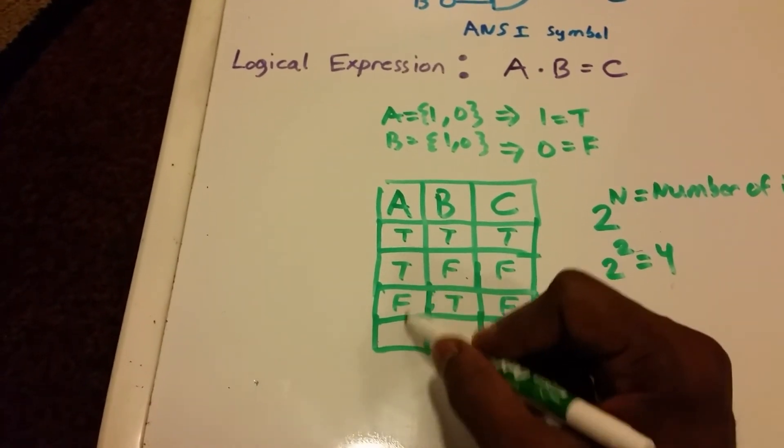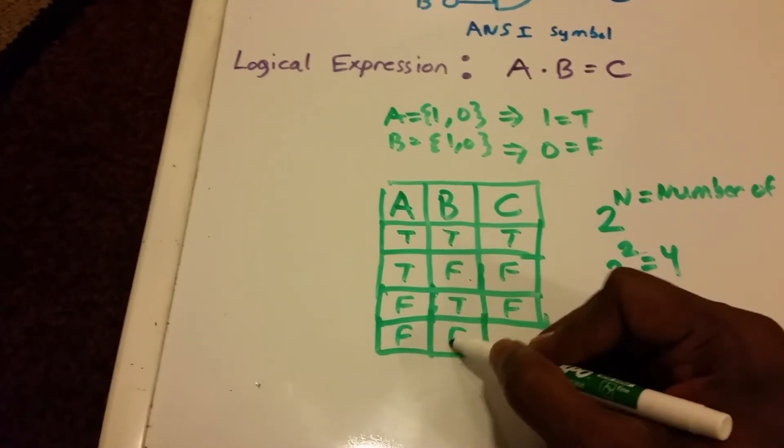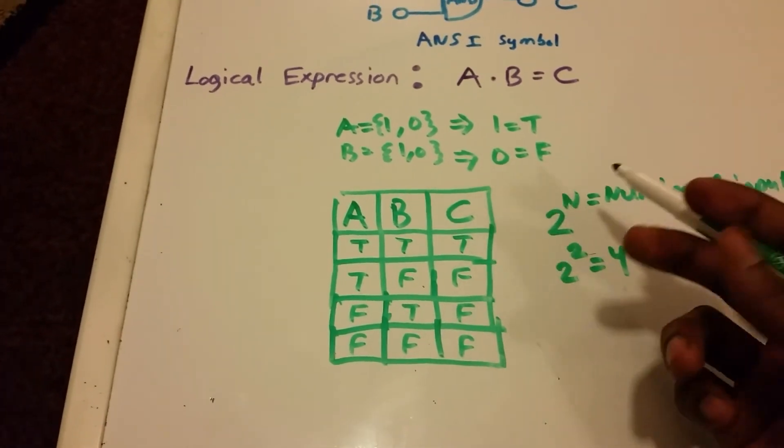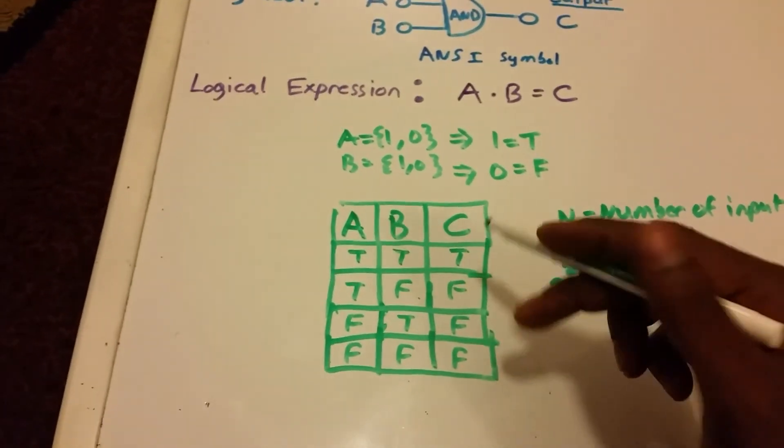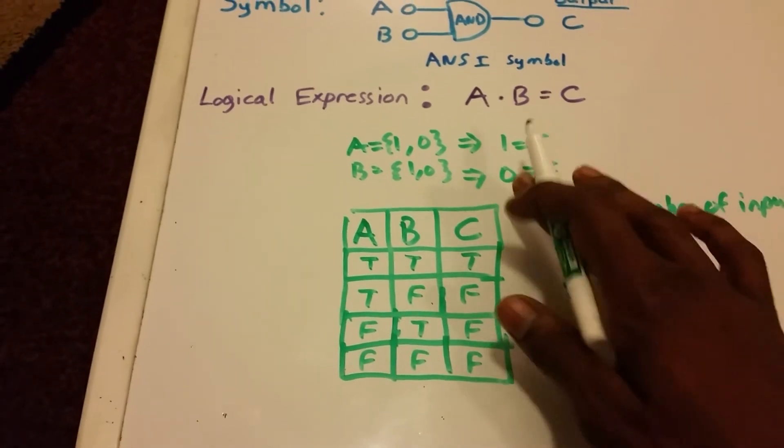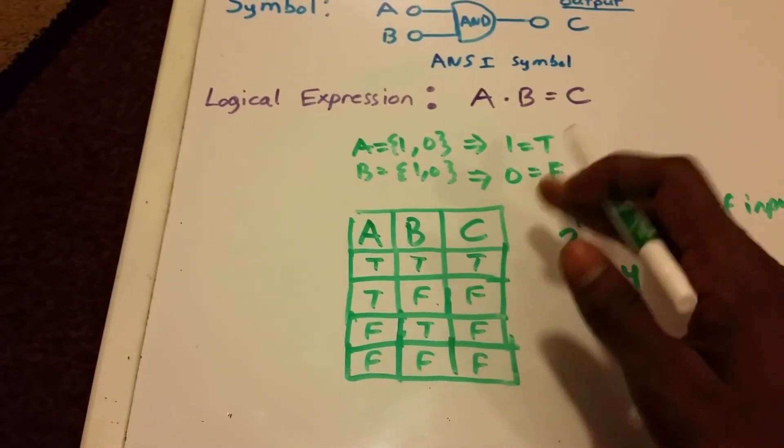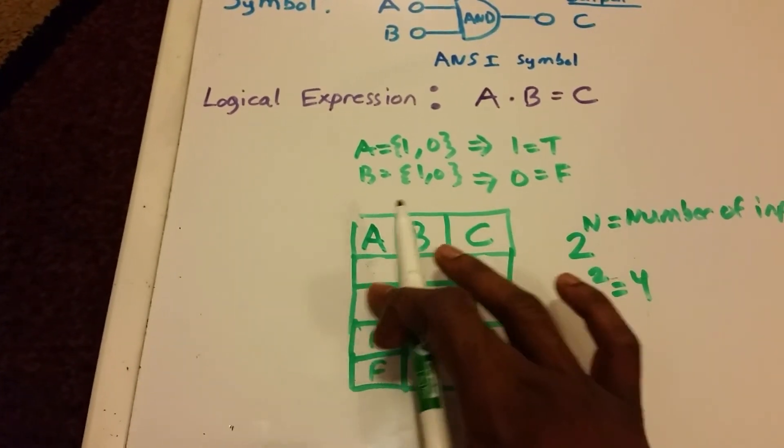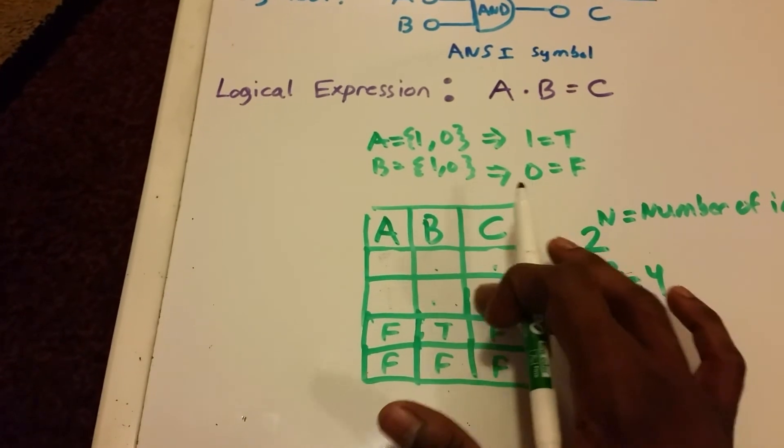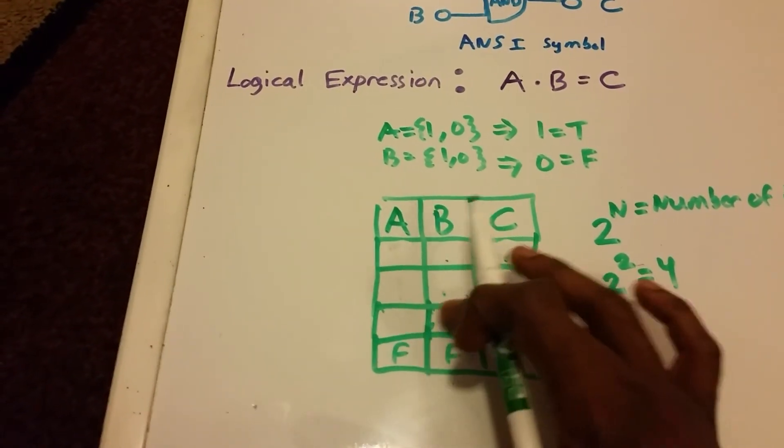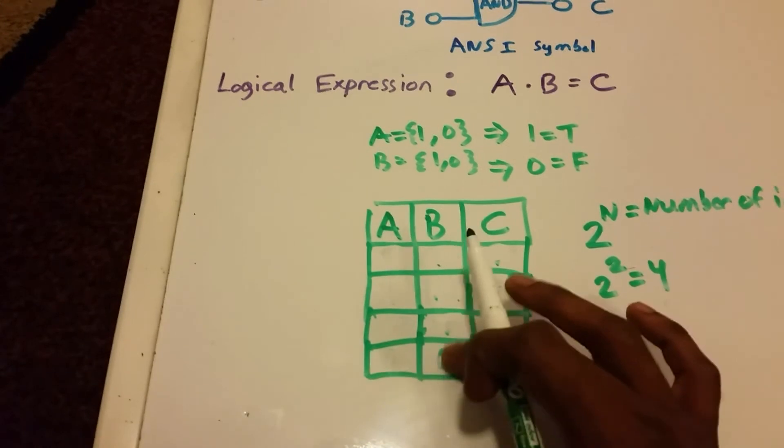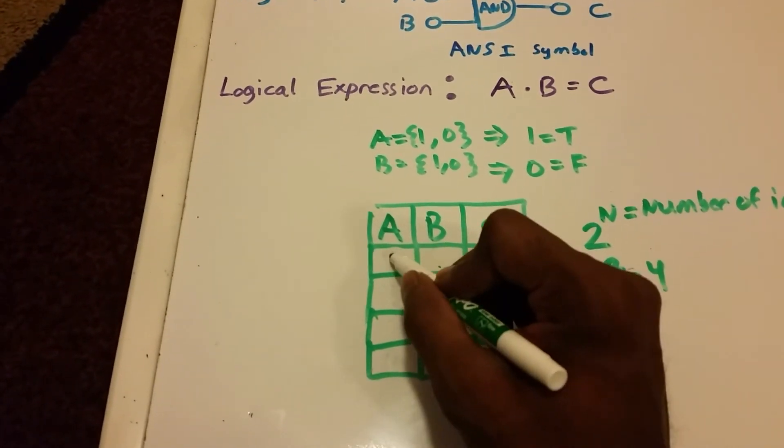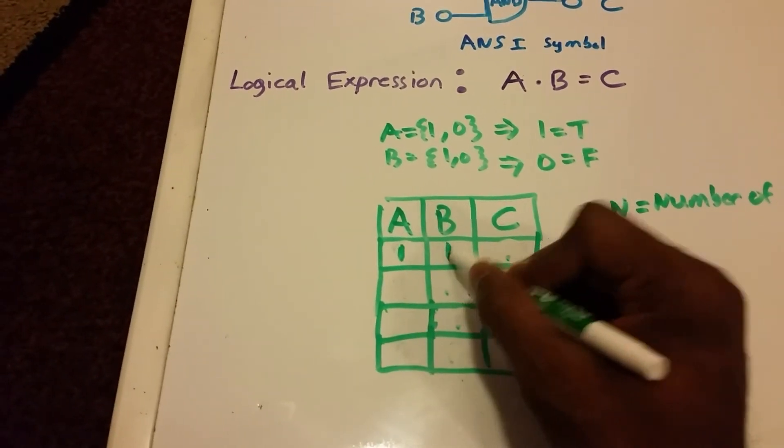But remember that we could use this logical expression to determine our output. So instead of using true and false, or T and F, we're going to use ones and zeros, and we're going to use that logical expression to solve our truth table here. I'm just going to erase some of these values.